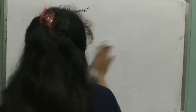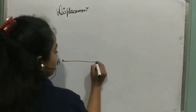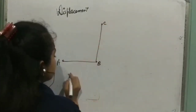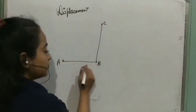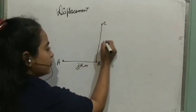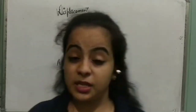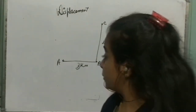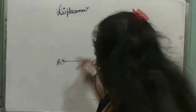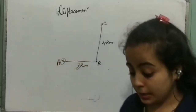Let's take another example for displacement. I went from A to B, then B to C, and I stopped at C. From A to B I covered 3 km, and from B to C I covered 4 km. Now my starting point is A and my final point is C. For displacement, I need the shortest distance — the direct distance between the initial point A and the final point C.